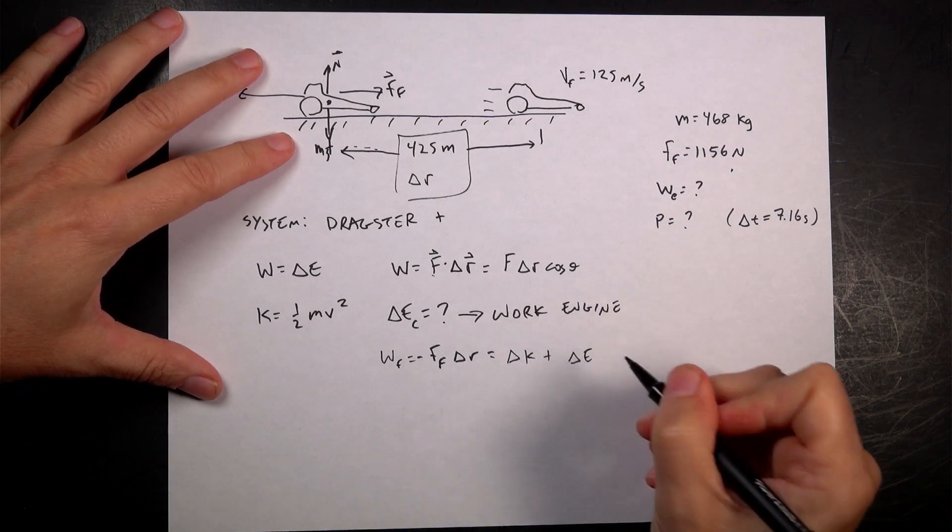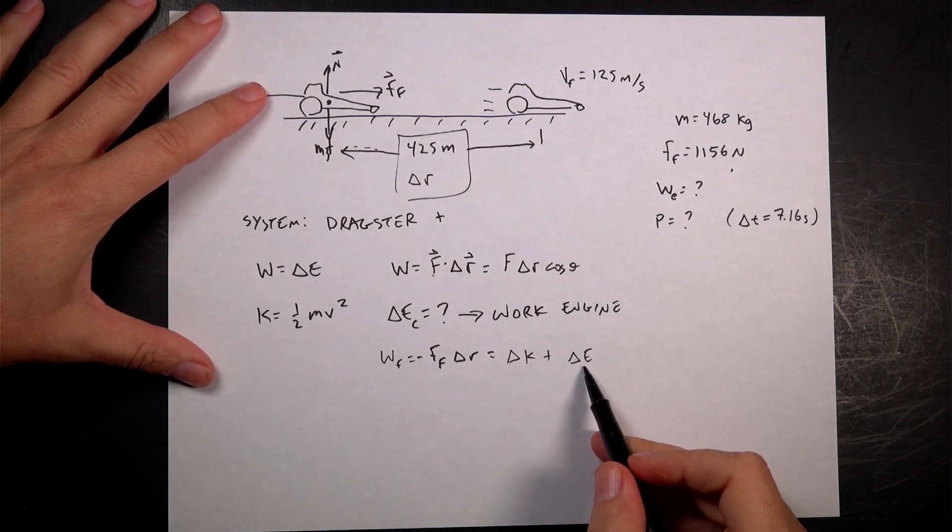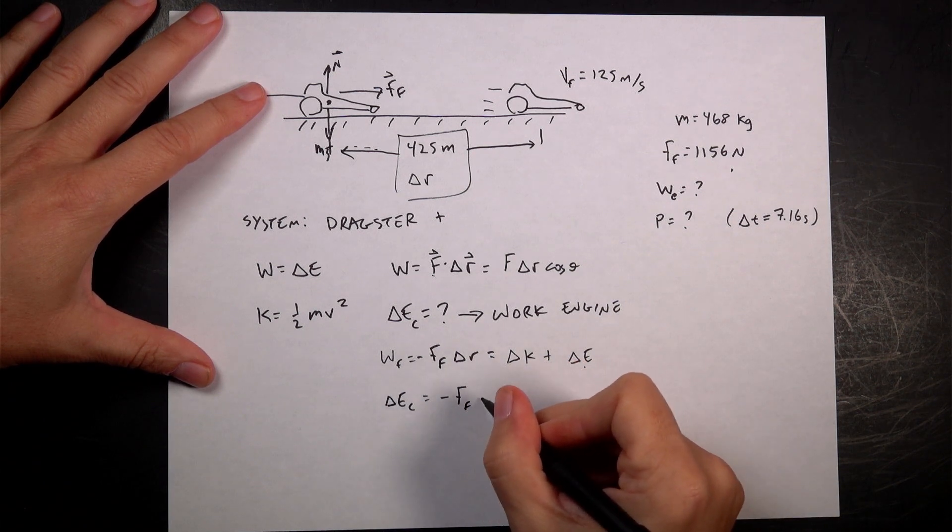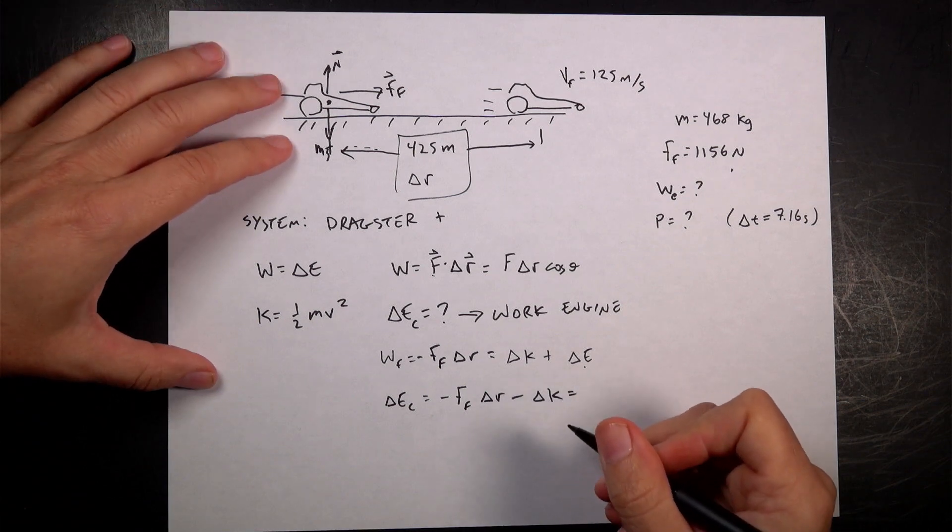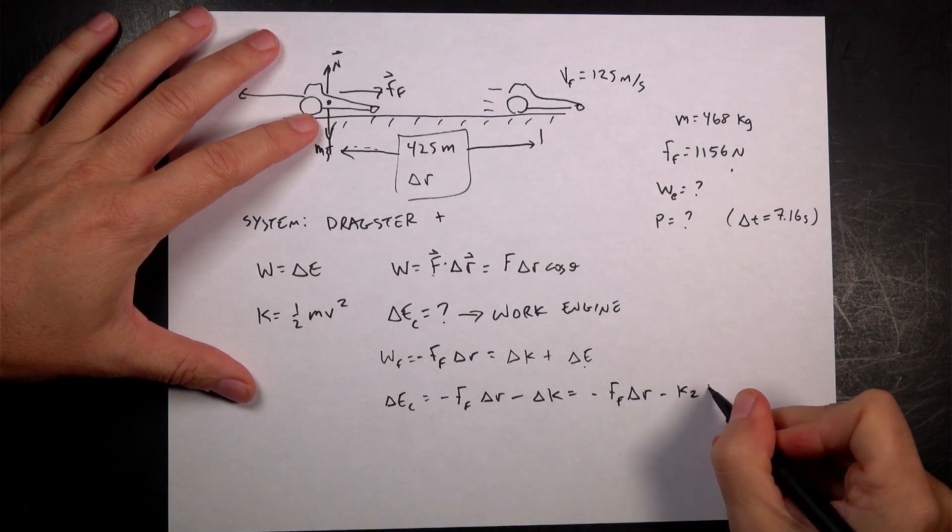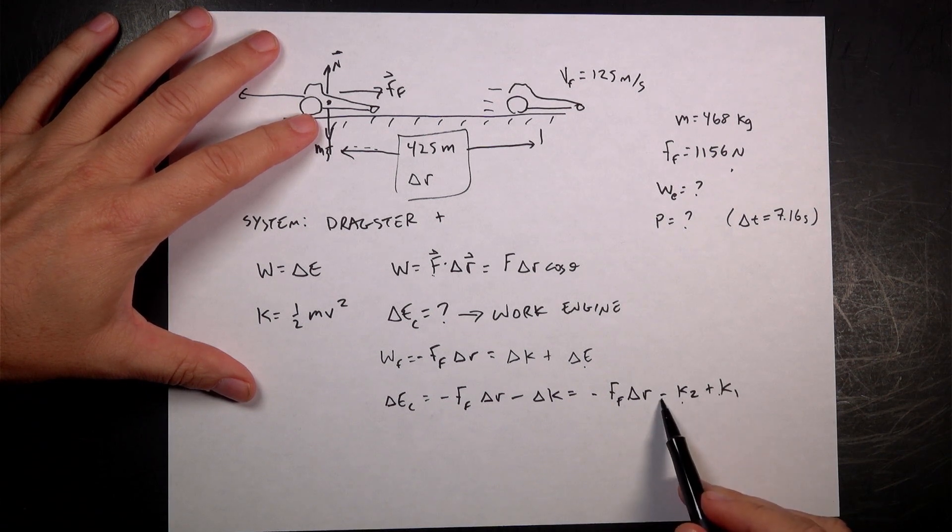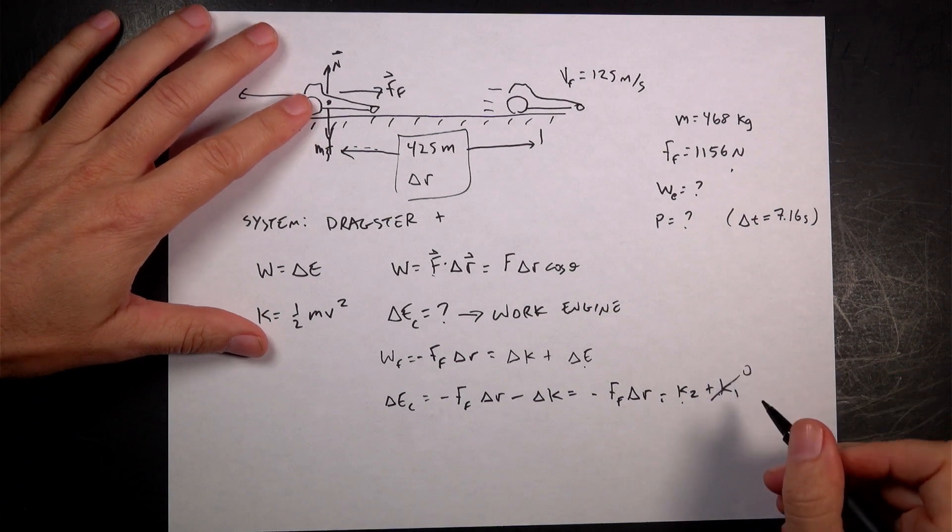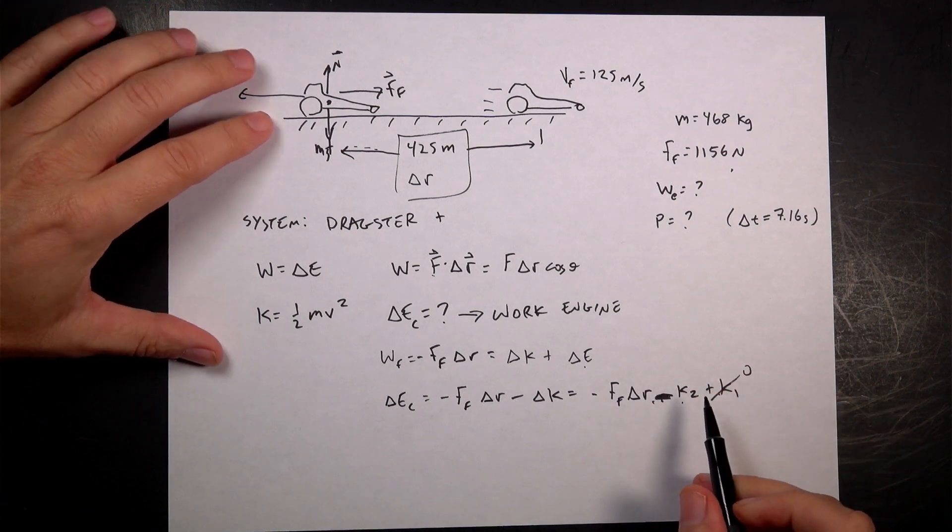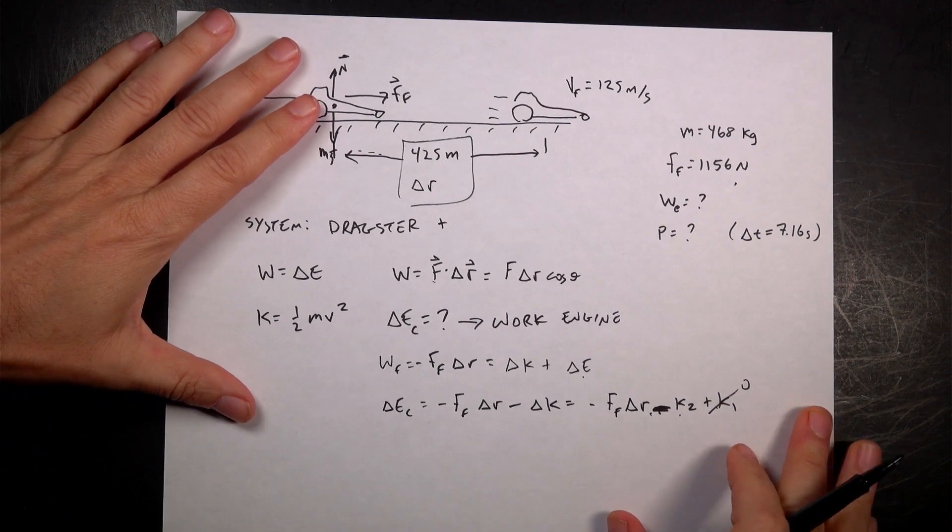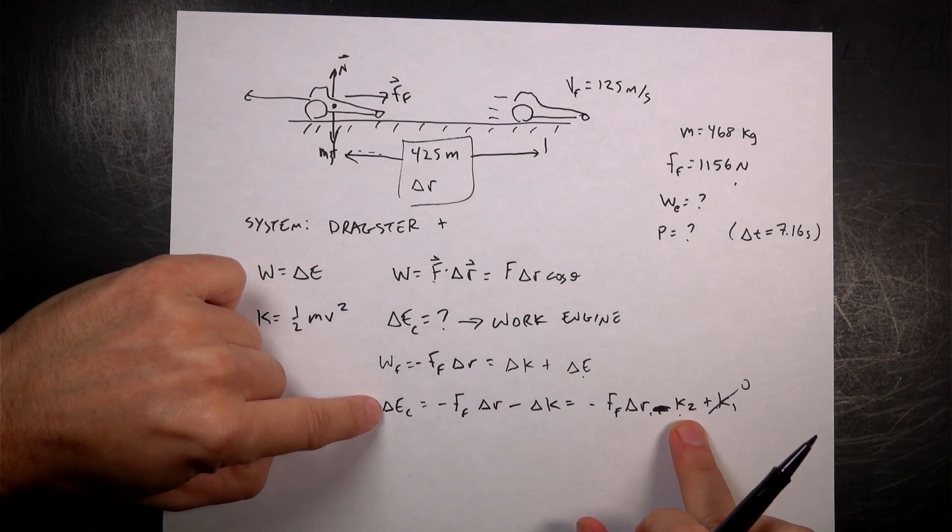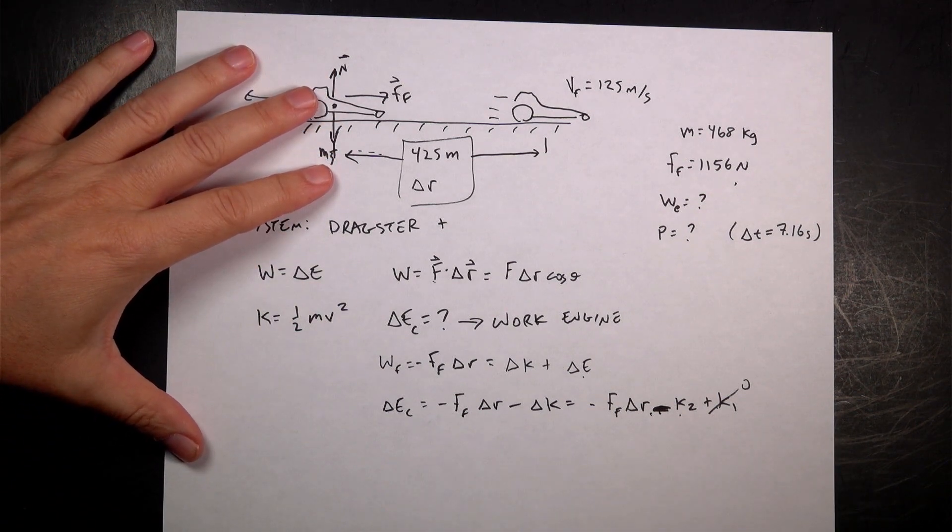And that's going to equal the change in kinetic energy, delta K, plus the change in chemical potential energy. I want to solve for that. So delta EC is negative F delta R minus delta K. This equals negative FF delta R minus K2 plus K1, because this is final minus initial but I have a negative sign. The initial kinetic energy K1 is zero - it starts from rest. So now I'm going to get a negative change work done on the car and a final kinetic energy. That's going to give me a negative value for the change in internal energy, and the work is the opposite of that. So we're really done.